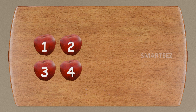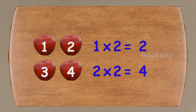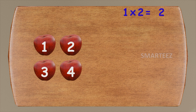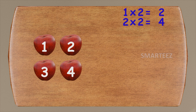Looking at this way, we can say one times two apples is two and two times two apples is four. It doesn't matter if it's apples or any other thing. One times two is two and two times two is four. This is what we call multiplication. We have an × sign for multiplication, and when we see an × we say times. That's one times two is two and two times two is four.